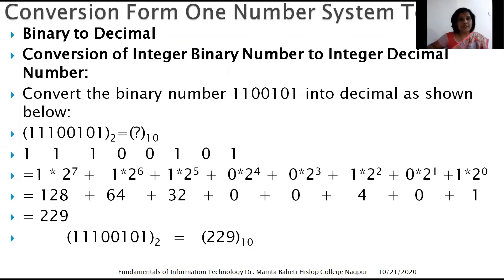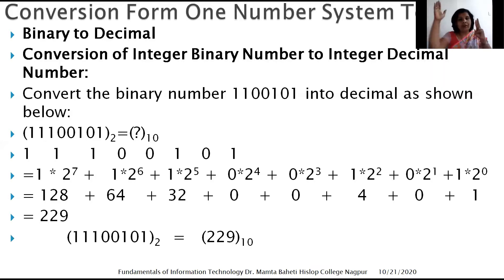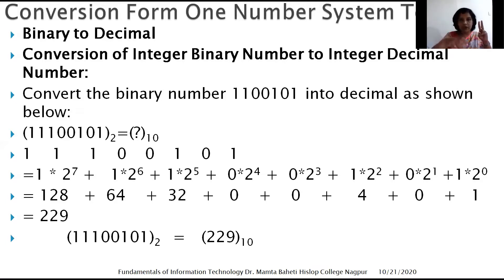In this section we will see how to convert from binary to decimal. We will first convert an integer binary number to an integer decimal number. Consider the number 11100101 — this is a binary number. First step: separate out each digit. Second step: from right to left, from least significant bit to most significant bit, assign the weights. Since it is a binary number, we take base 2, and the powers start from 0, 1, 2, and so on.